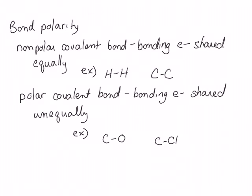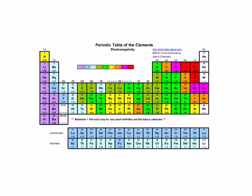We can predict bond polarity using a trait of atoms called electronegativity. Electronegativity describes how strongly an atom pulls on or wants electrons. We can predict electronegativity by looking at the periodic table — electronegativity increases as we go across the table. For example, fluorine is more electronegative than oxygen. Electronegativity also increases as we go up the table, so fluorine is more electronegative than bromine.